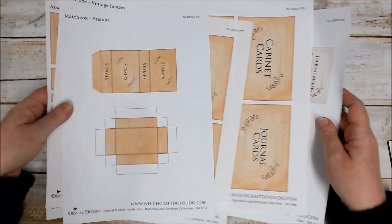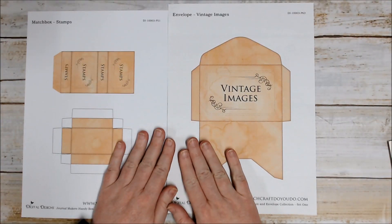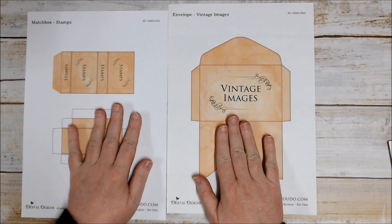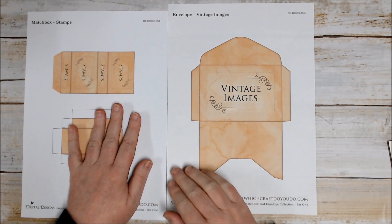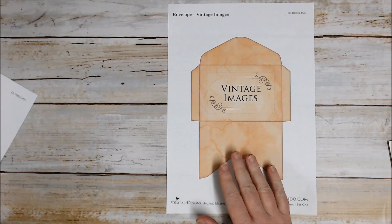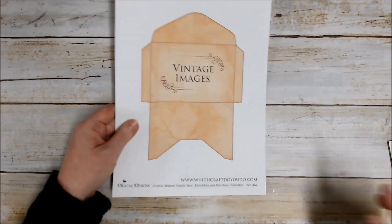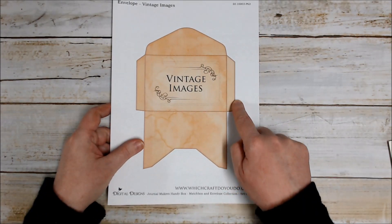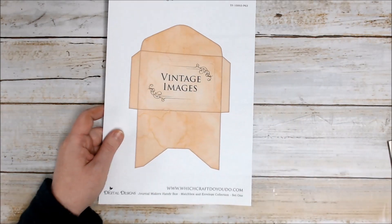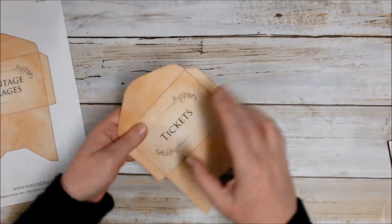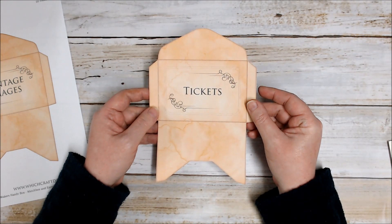So let's get into the tutorial. I've printed out here one of the envelopes and one of the matchboxes and I'll show you how to put those together. The envelope is pretty self-explanatory - you just need to cut around the edge of your envelope.